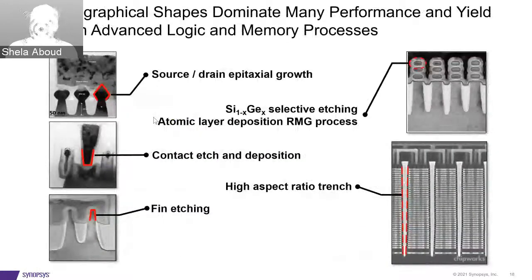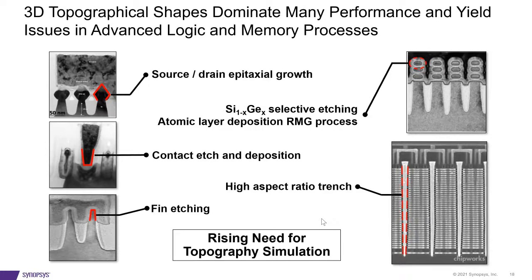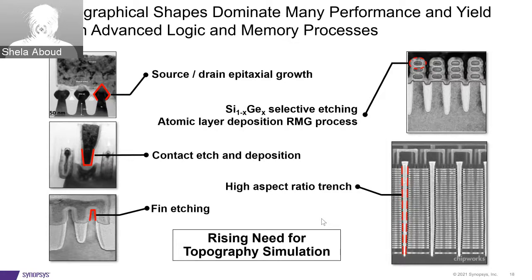In addition to nanosheets, other areas requiring very tight control of etching and deposition include source-drain epitaxial growth regions, silicon-germanium selective etching, contact etching and deposition, fin etching for FinFETs, and high aspect ratio trenches like those in NAND. This really shows the rising need we have for topological simulations.